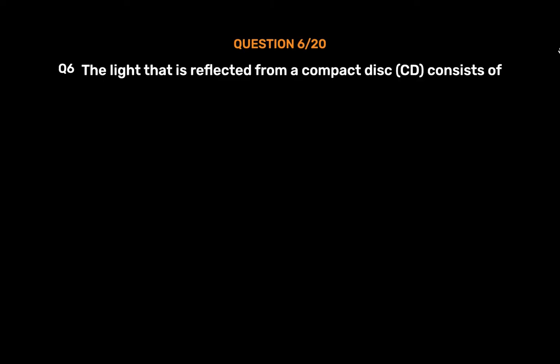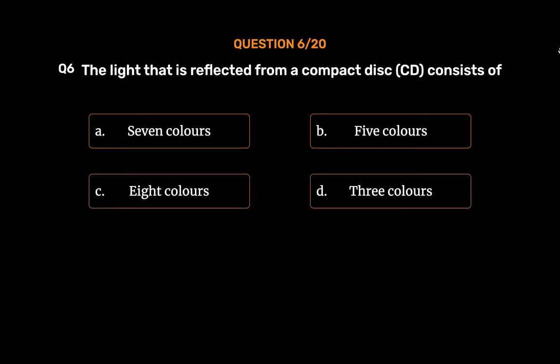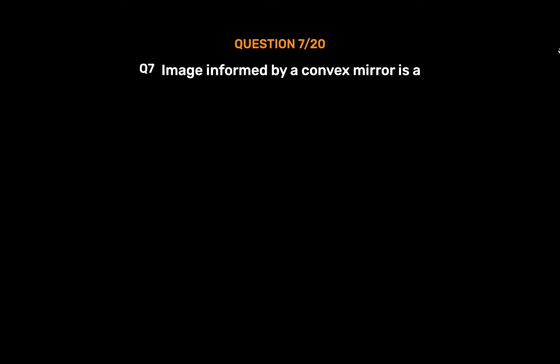Question No. 6: The light that is reflected from a compact disc consists of — Option A: 7 Colors, Option B: 5 Colors, Option C: 8 Colors, Option D: 3 Colors. The correct answer is Option A: 7 Colors.